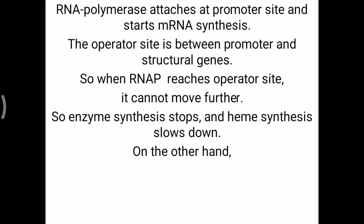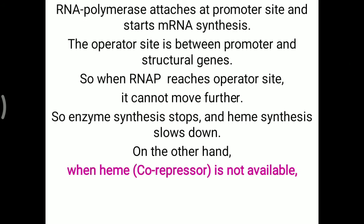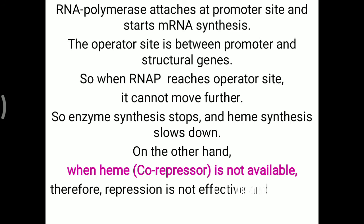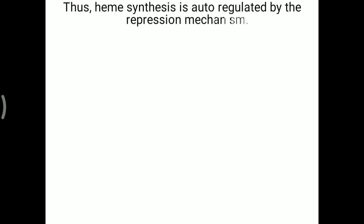On the other hand, when heme or the corepressor is not available — when heme is decreased inside the cell or the body has a need for heme — the corepressor molecule is absent, so the holorepressor molecule will not be synthesized. Repression is therefore not effective, and enzyme synthesis starts again with the help of RNA polymerase. Simply put, heme synthesis is auto-regulated by the repression mechanism.